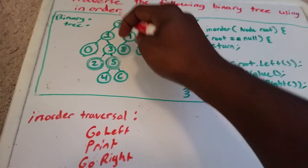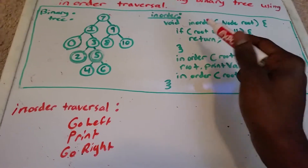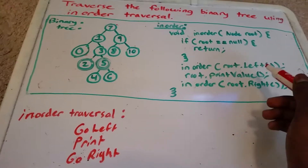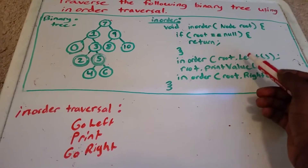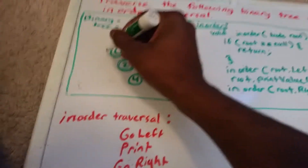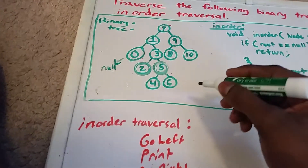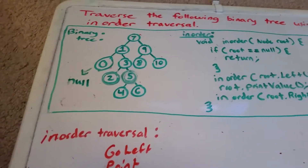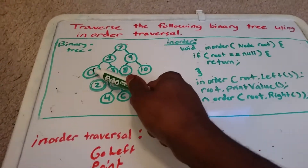We start off by inputting the root node, which is 7. From the code here, we check to see if node 7 is null — it's not, because it has the value 7 — so we're going to go left. We get to 1; 1's not null, so we go left again. We get to 0; 0's not null, so we go left again. To the left now is a null value — there's nothing there. So now that we have null, we're going to return.